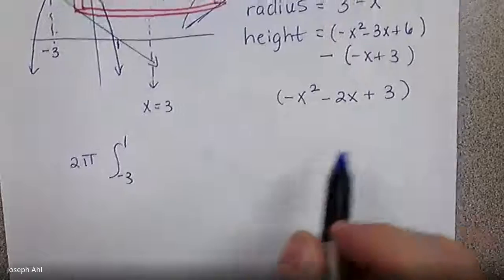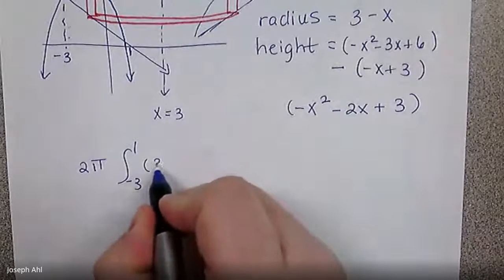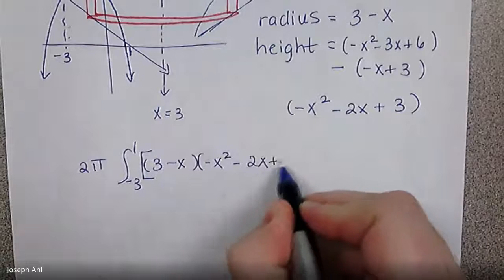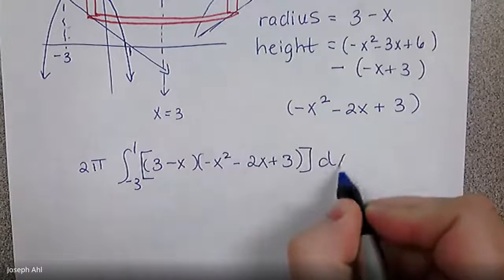So that's simply just to save a little bit of time here, you'll trust me that calc intersect would give you those values. So it's two π and then radius times the height, so three minus x times negative x squared minus two x plus three. And this is dx.